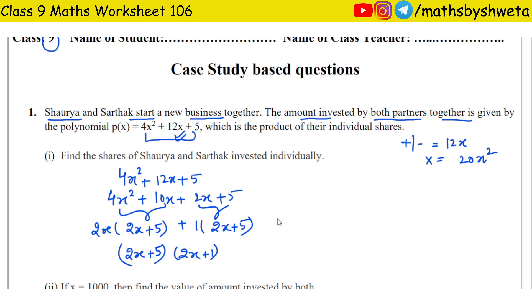So this gives us Shourya and Sarthak's shares. Shourya's share is 2x + 5. Sarthak's share is 2x + 1.